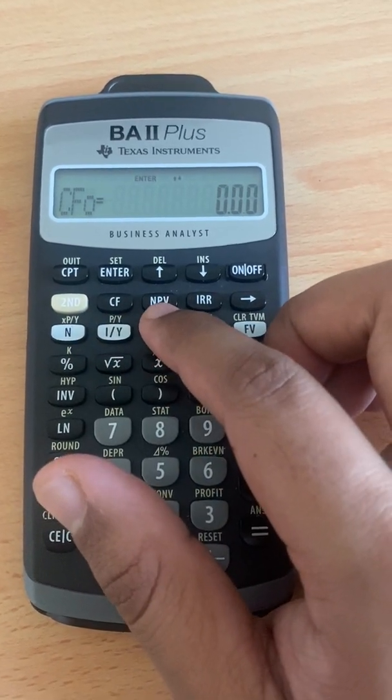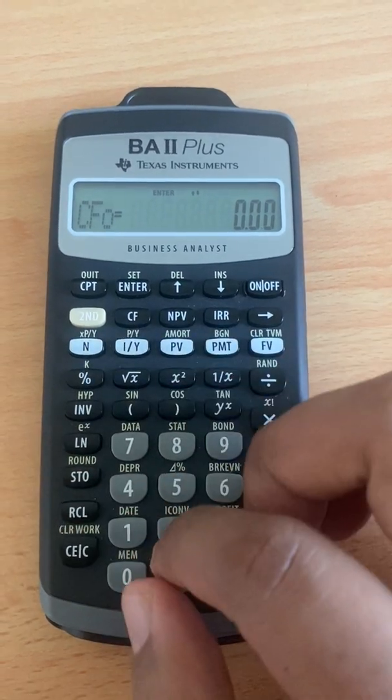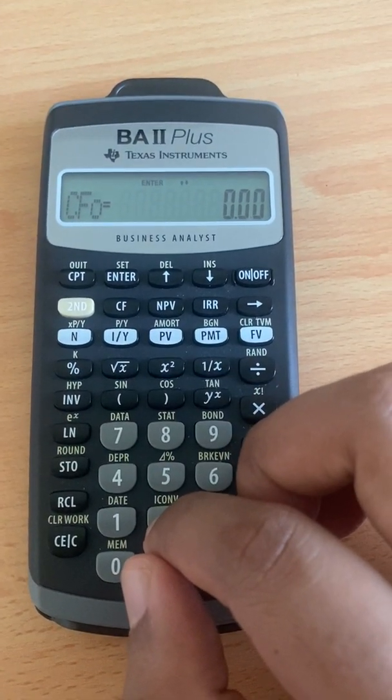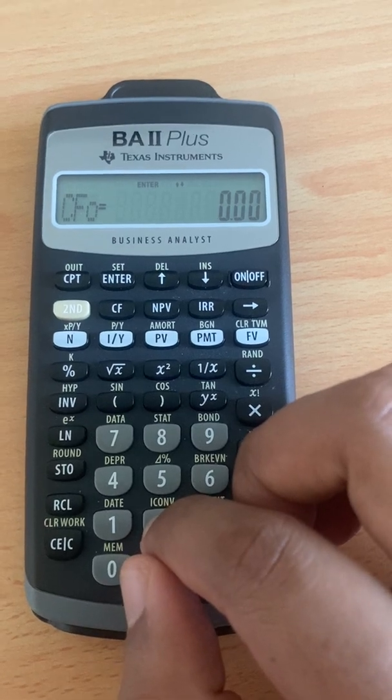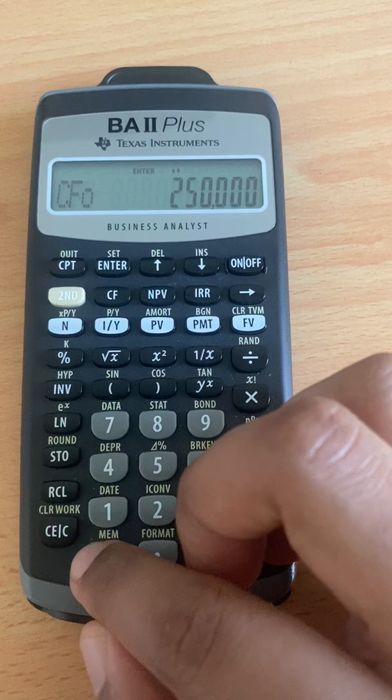CF, and we will calculate net present value using the financial calculator. Before we begin, we need to know the initial cost is 2.5 million.